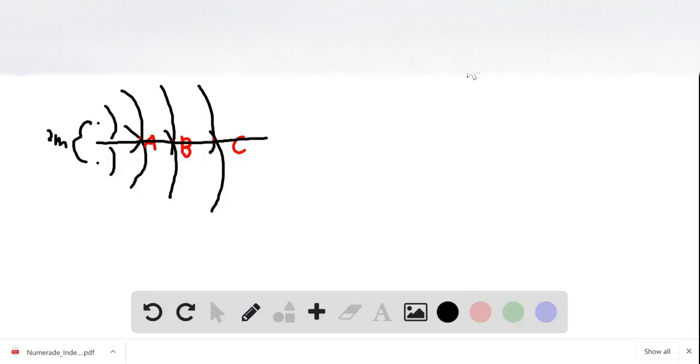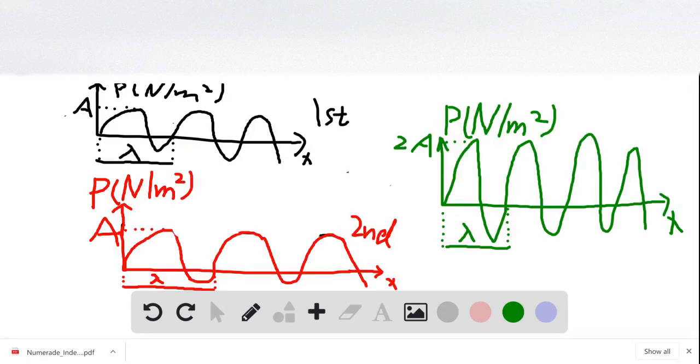For question B, we need to create a graphical representation, which is a pressure versus distance graph. Here, this is the first source. I created the graph for the first source. You see the pressure is on the y-axis and the distance on the x-axis. This is the wave graph for the first source, and the amplitude for the first source is A.